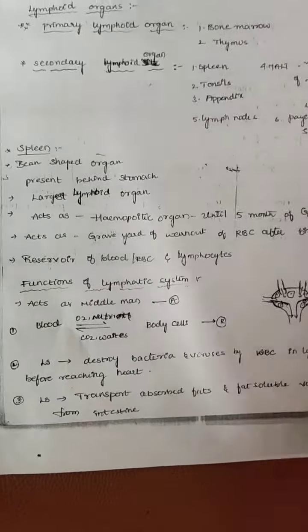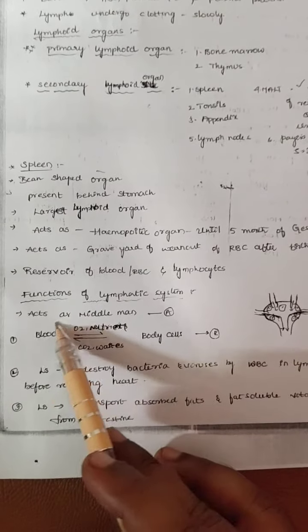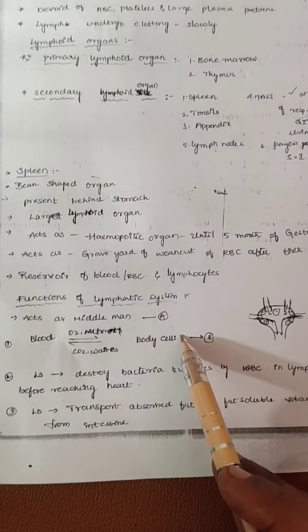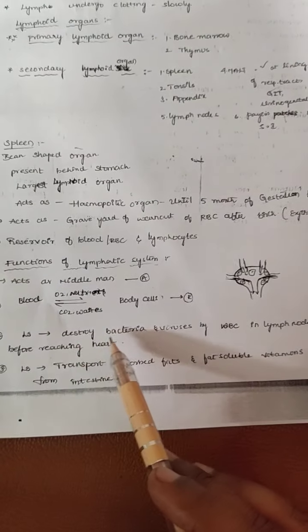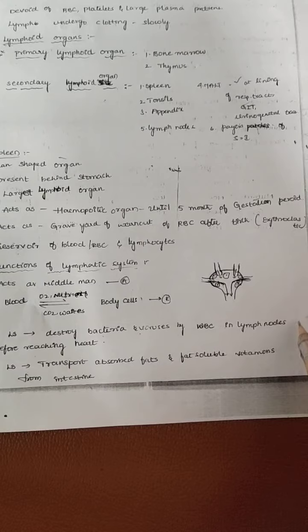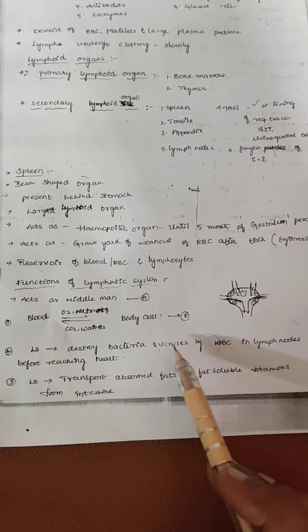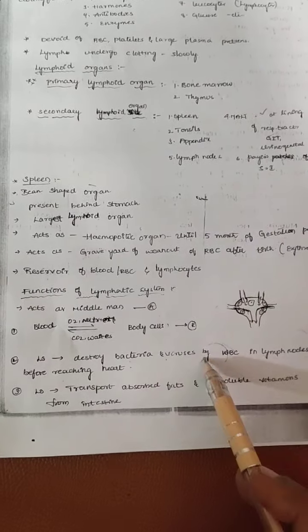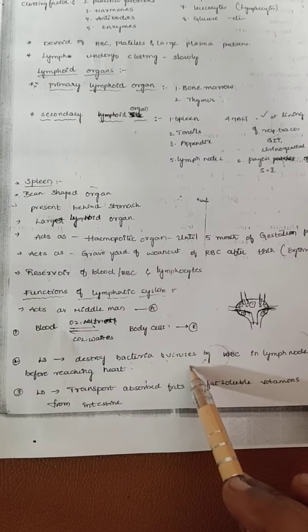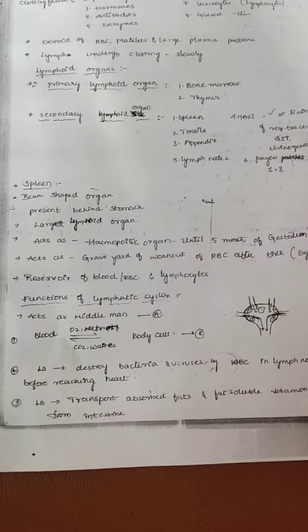The lymphatic system acts as a middleman between the blood and the body cells. The lymphatic system can destroy bacteria and viruses because in the lymph nodes they have WBCs. Before reaching the heart, it can remove or destroy bacteria and viruses. This is the extra information regarding the lymphatic system.